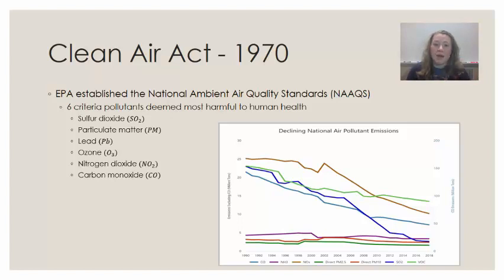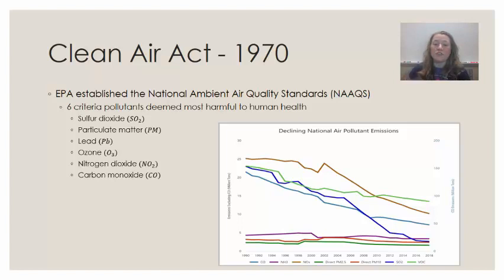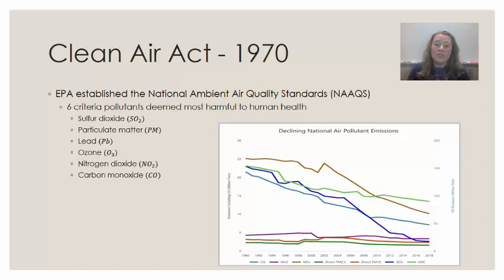Pay attention — that's carbon monoxide, not carbon dioxide. After the National Ambient Air Quality Standards were established, the United States made conscious efforts to reduce the concentration of these pollutants in the atmosphere, thus improving air quality. The graph on this slide shows that from 1990 to 2018 we have continued to make improvements in the National Ambient Air Quality.